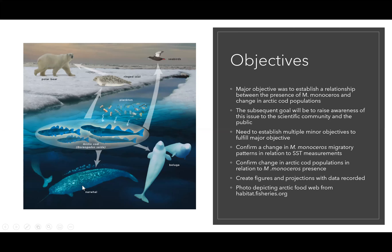For example, if narwhals are more present and arctic cod populations go down, that's going to mean trouble for belugas, trouble for the ring seal, trouble for the polar bear — and the plankton are going to spike, potentially causing an algal bloom.